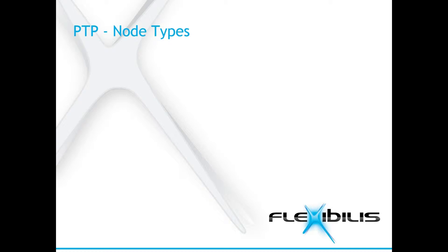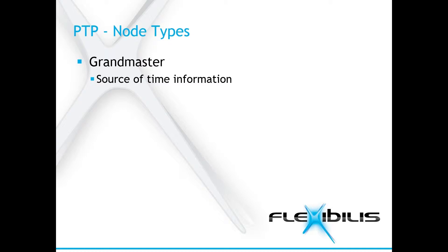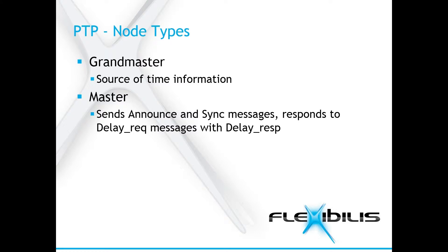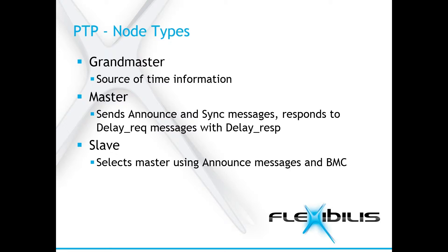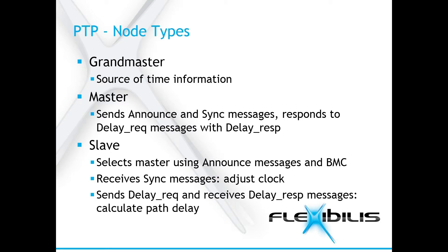There are three kinds of PTP clocks: ordinary clocks, boundary clocks, and transparent clocks. Ordinary clocks are either masters or slaves. A grandmaster clock is the source of time information for the PTP network. The grandmaster clock typically has an external clock source connected to it, or it has a very accurate internal time reference, for example an atomic clock. The master clocks send announce and sync messages as well as respond to delay request messages with delay response. A slave clock uses the PTP protocol to follow the time of its selected master clock. The slave selects its master using announce messages and BMC. It receives sync messages and adjusts its clock based on them. It also sends delay requests and receives delay response messages and calculates the path delay based on those.